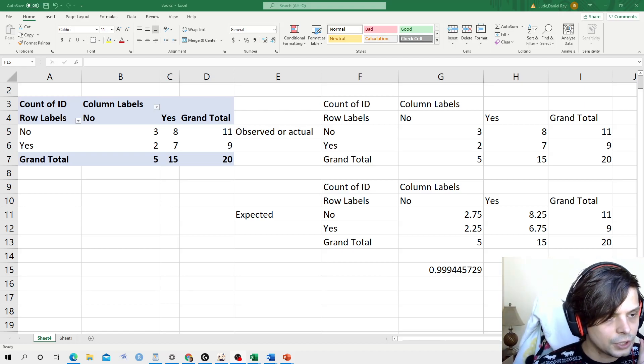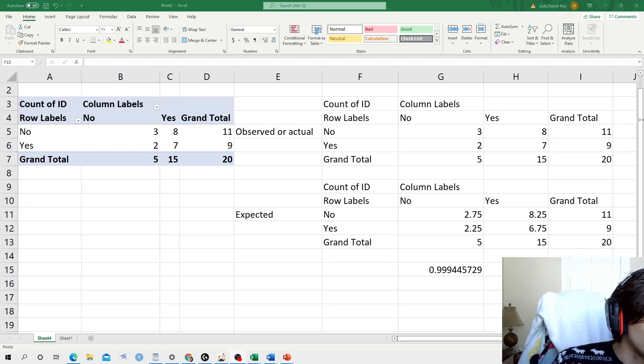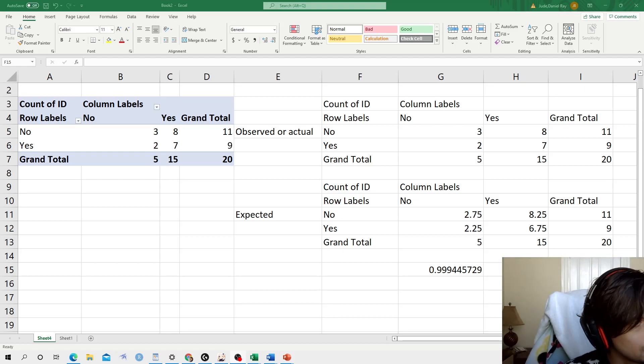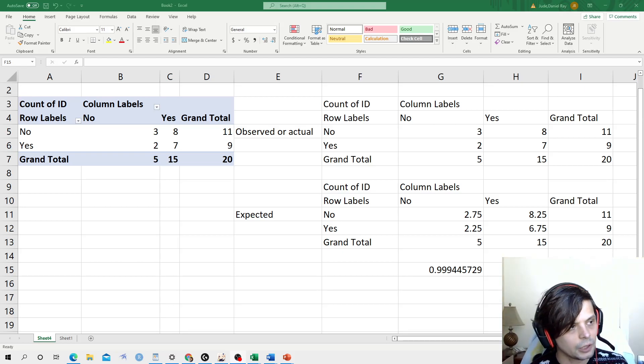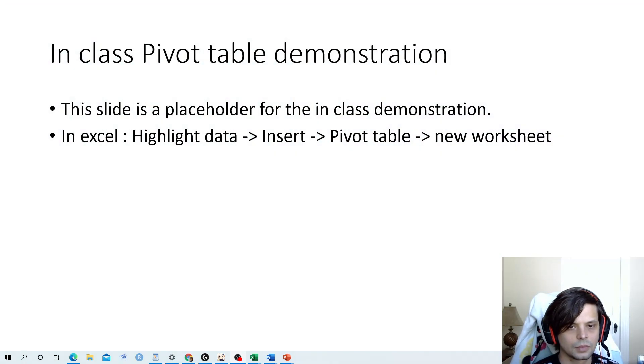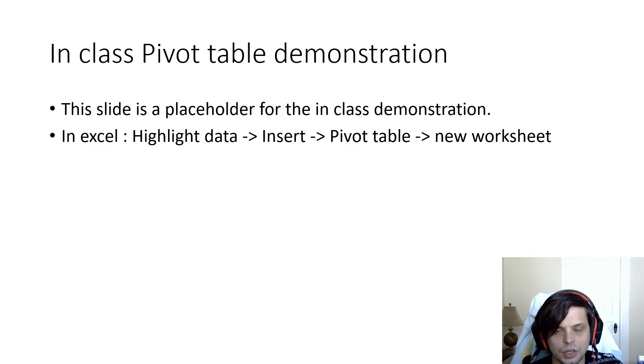Hello, so this is part two of the chi-square test lecture and pivot table lecture for Social Work 204. We'll get right to it by jumping back into the lecture.